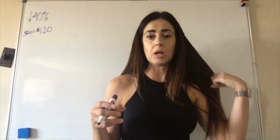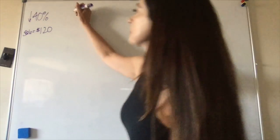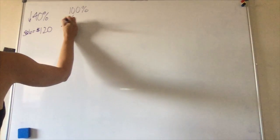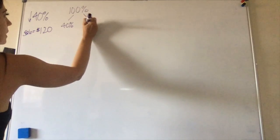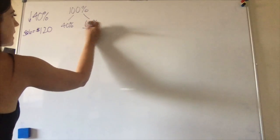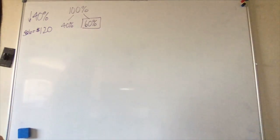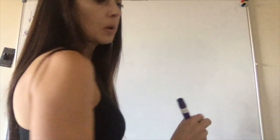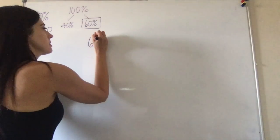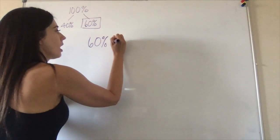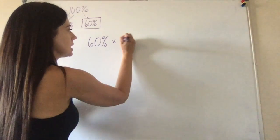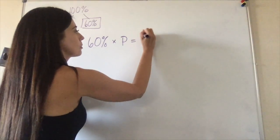So sixty percent of the original price is one hundred and twenty, because we have a hundred percent being our total, right? Forty percent has already been discounted, but what's left over signifies, or represents, sixty percent. So we're going to write sixty percent of—multiplication—the original price, so I'm going to use p, is the discounted price, which is one hundred and twenty dollars.